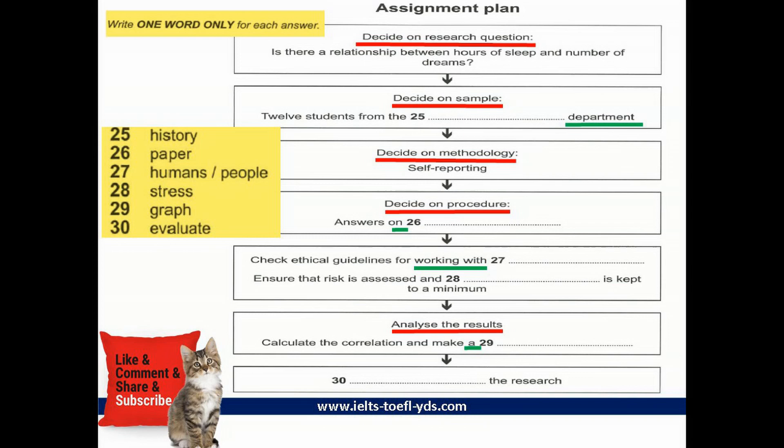Then we need to think about who we'll do the study on. About 12 people? Right. And shall we use other psychology students? Let's use people from a different department. What about history? Yes, they might have interesting dreams. Or literature students? I don't really know any. OK, forget that idea.